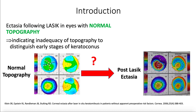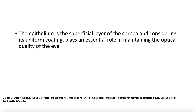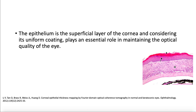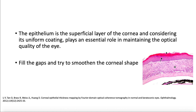We have to ask ourselves: where is the problem? Is topography enough to tell whether the cornea is normal or not? The epithelium is the superficial layer of the cornea, and considering its uniform coating, it plays an essential role in maintaining the optical quality of the eye. The role of the epithelium is to fill the gaps and try to smoothen the shape of the cornea.